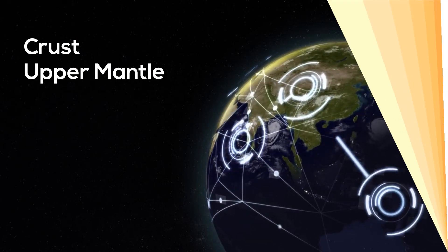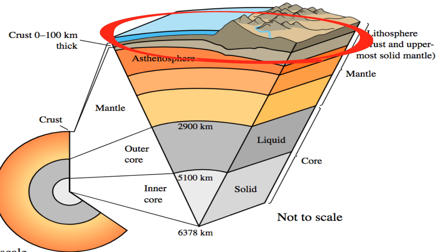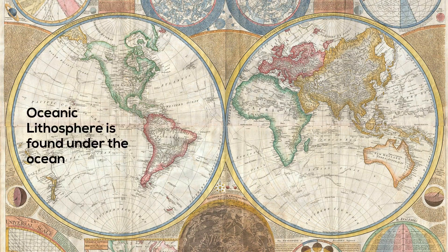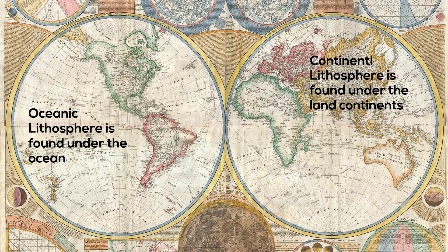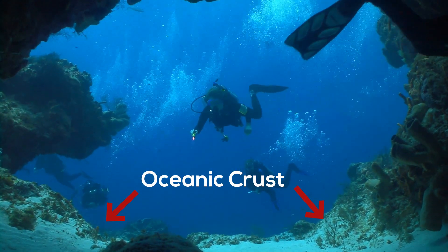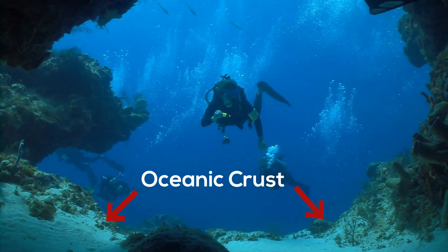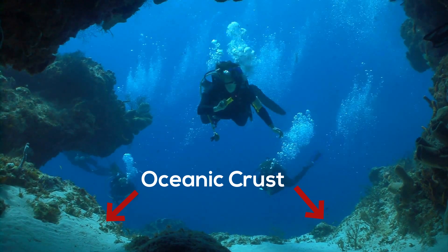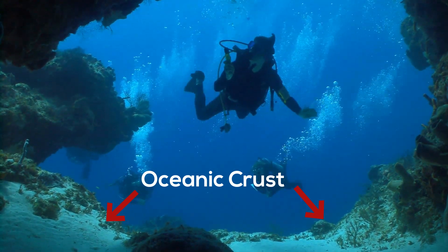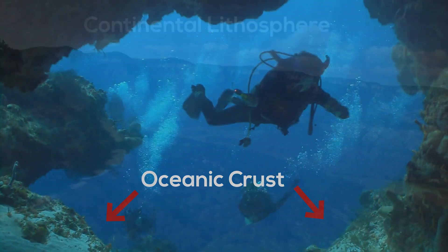You will notice in this picture that the lithosphere is the top layer of the Earth. Because the Earth consists of land and water, the lithosphere can be subdivided into oceanic lithosphere and continental lithosphere. Oceanic lithosphere is associated with the oceanic crust and exists in the ocean basins, and is more dense than continental lithosphere.